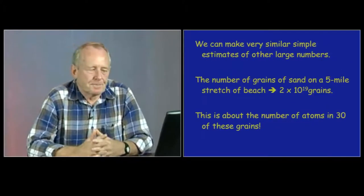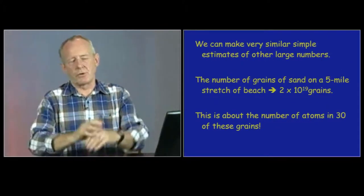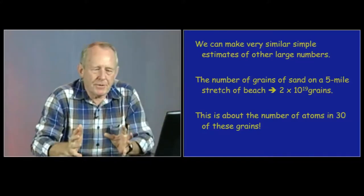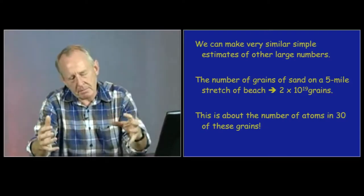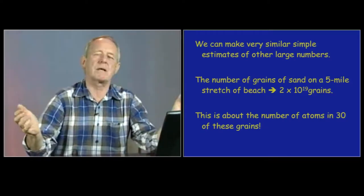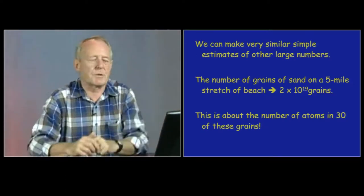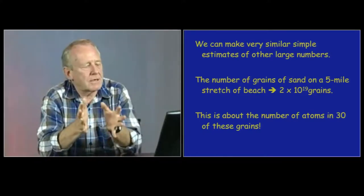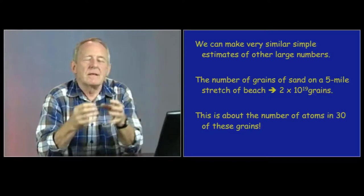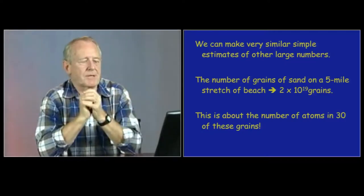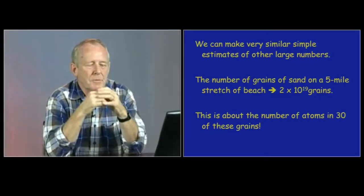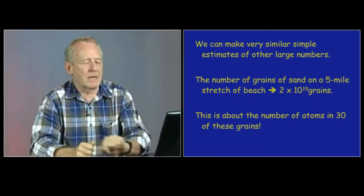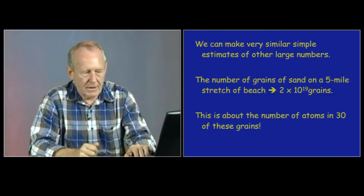How about other things? You've heard of the story, how many grains of sand on this beach? It's a reasonable question. If we do the same sort of thing, we estimate a little bit and then build it up and estimate the beach to be some sort of length. Perhaps five miles would be sensible. This time, we get an answer around about 10 to the 19 grains. Just to point out again the smallness of atoms, there would be enough atoms in about 30 tiny grains of sand to make up our 2 times 10 to the 19 in total.